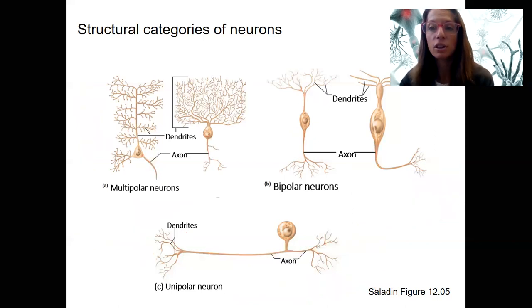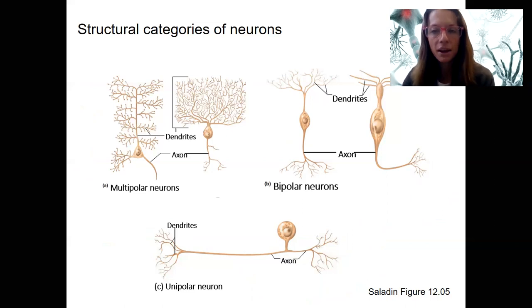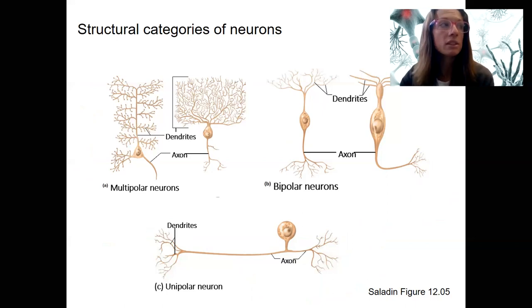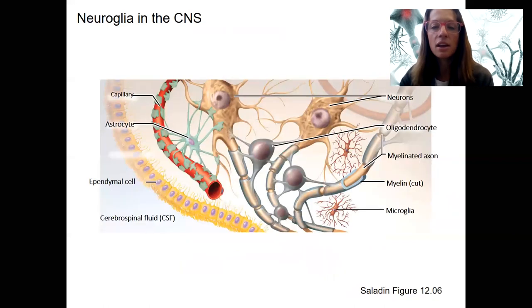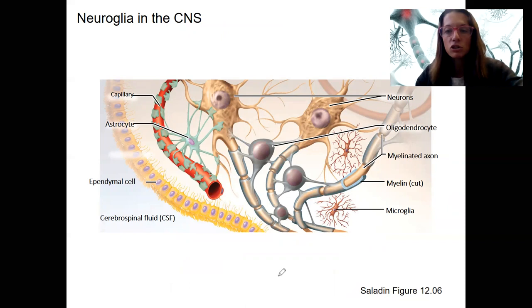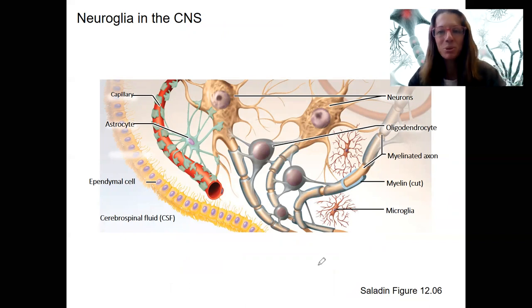That's the introduction to the three types of structural categories of neurons — multipolar, unipolar, and bipolar. I'll remind you of these categories when we see these neurons again and why they matter. The other thing I want to talk about in this video is neuroglia.